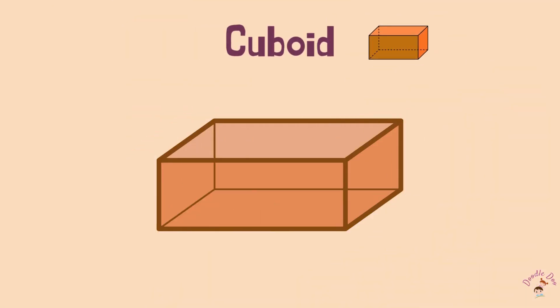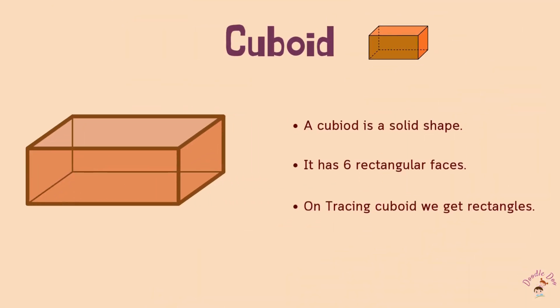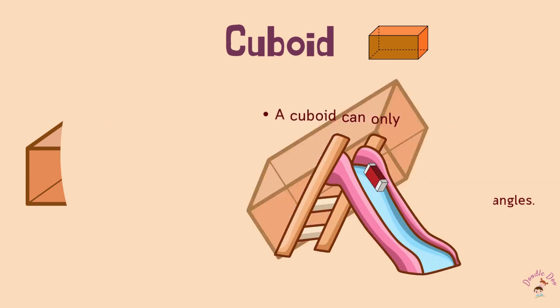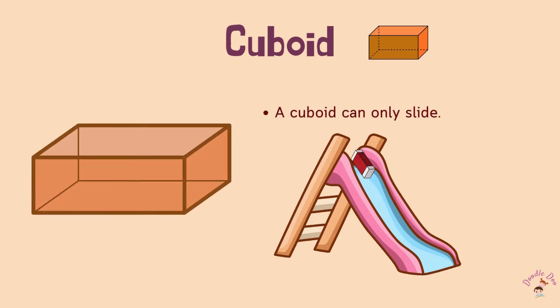Cuboid. It has 6 rectangle faces. On tracing a cuboid, we get a rectangle. A cuboid can only slide.